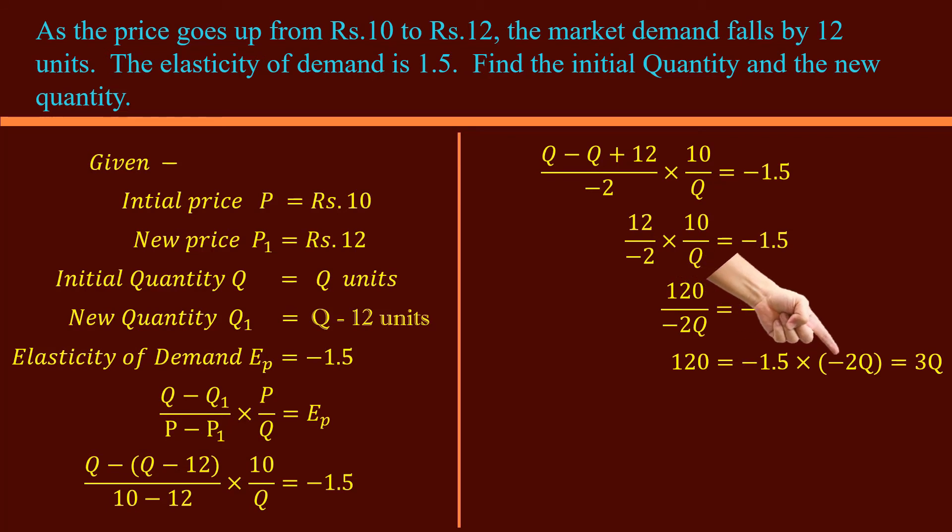Since Q is unknown, let us interchange the sides. 3Q equal to 120. Taking 3 to the right hand side, we have 120 over 3, 40. Q is 40 units.